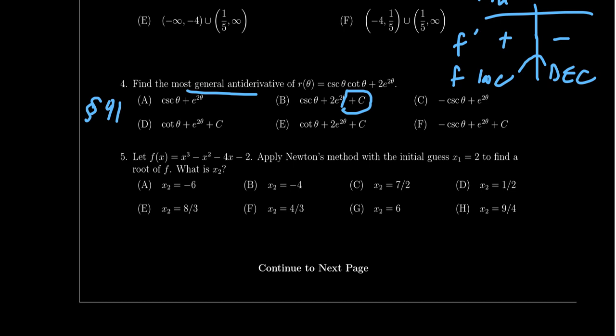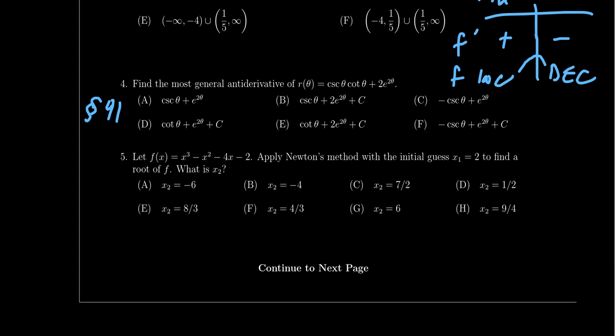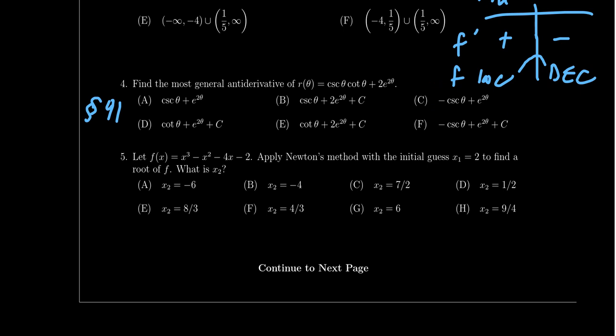Don't forget the plus C, because we're looking for the most general antiderivative. For instance, if you think the answer is −cosecant θ + e^(2θ), that might be an antiderivative, but without plus C it's not the most general. On this multiple choice question you can see the plus C options, but you do need to know to include plus C to get full credit.